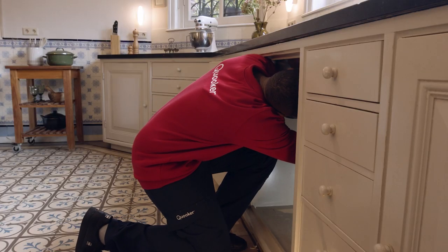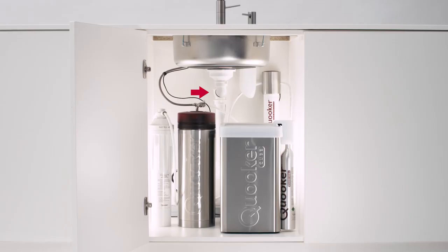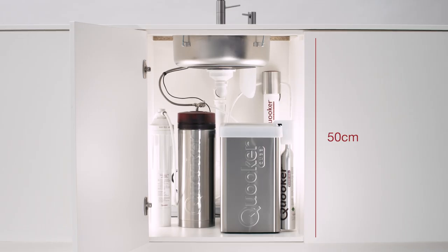To install a Quooker, all that's required is a space for the tank, a 13 amp power socket, access to a waste pipe and a water supply underneath the work surface within 50 centimetres.